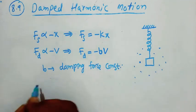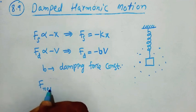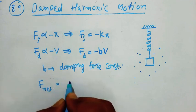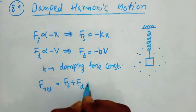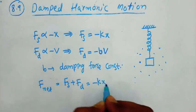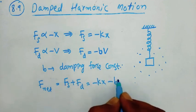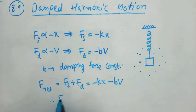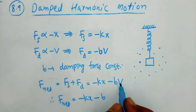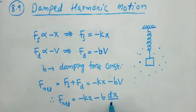What is the net force on the block? F net is equal to Fs plus Fd. So here Fs is equal to minus Kx minus Bd. Therefore F net is equal to minus Kx minus B into velocity, which is nothing but the rate of change of displacement, that is dx by dt. Let us take this as equation number one.